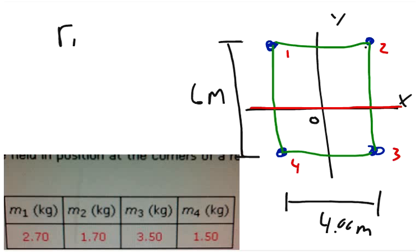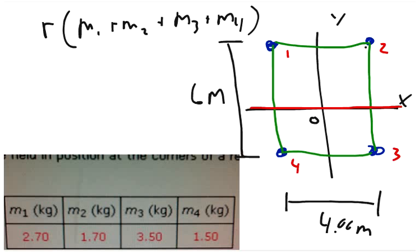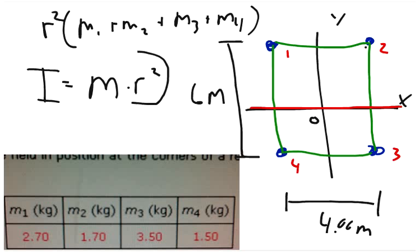Since all the radii are the same, we can factor out the radius squared and say: r² times (m₁ + m₂ + m₃ + m₄). The moment of inertia I equals mass times radius squared. It shows that our diameter is 6 meters, so our radius is going to be half of that — r equals 3 meters.